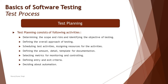Test planning consists of several important activities. For example, determining the scope and risk, and identifying the objectives of testing, as well as defining the overall approach of testing. Determining the scope means identifying what your testing process is required to conduct and achieve as part of the testing life cycle, because not everything falls under your scope every time.